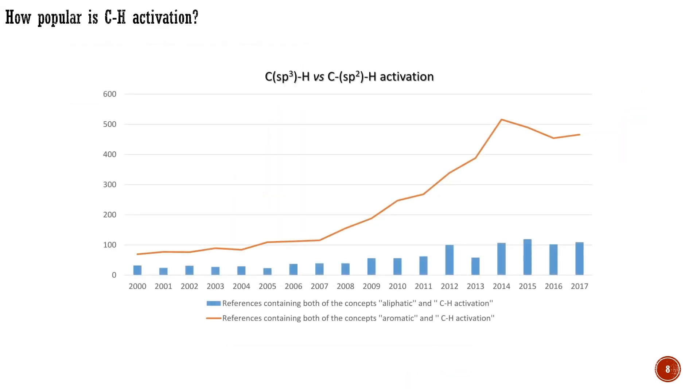On the last chart, one can see the comparison of C-H transformations in SP2 and SP3 hybridized systems. The SP2 C-H activations are much more popular, which can be explained by the increased reactivity of aromatic systems and the ease of dealing with purification and separation of products derived from aromatics.